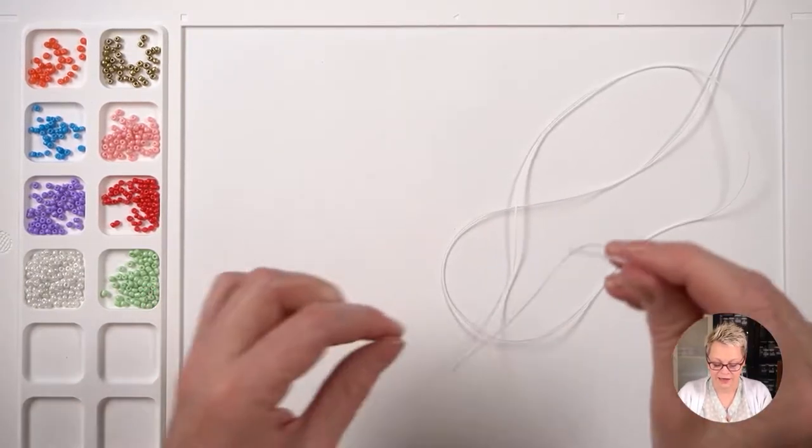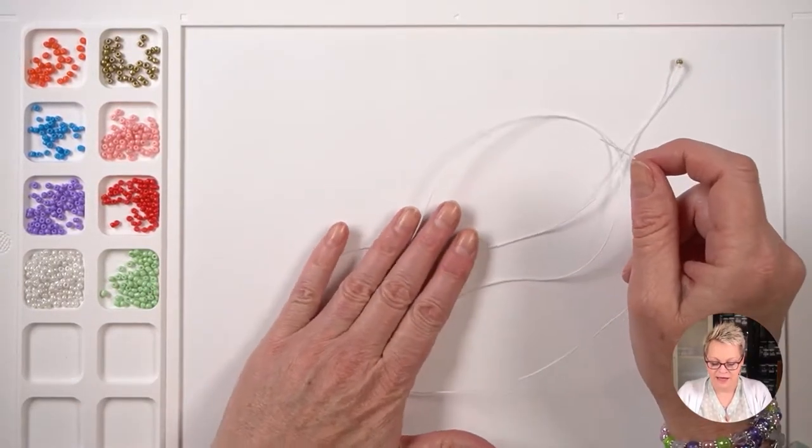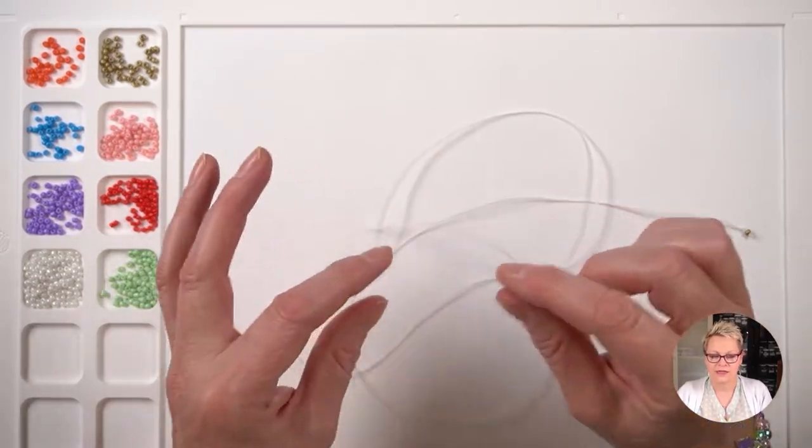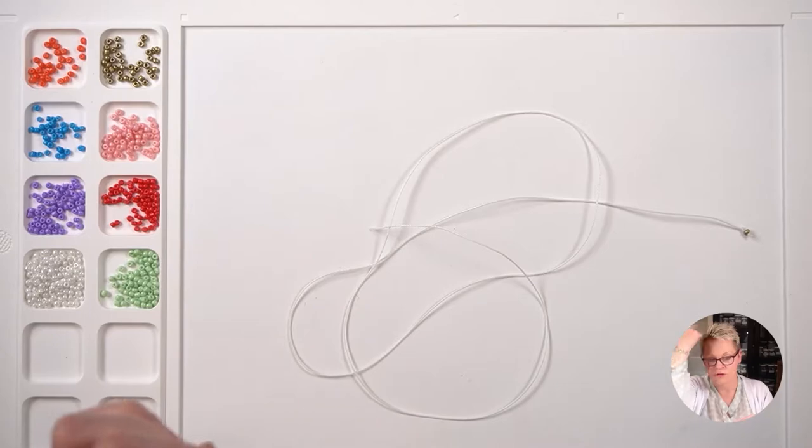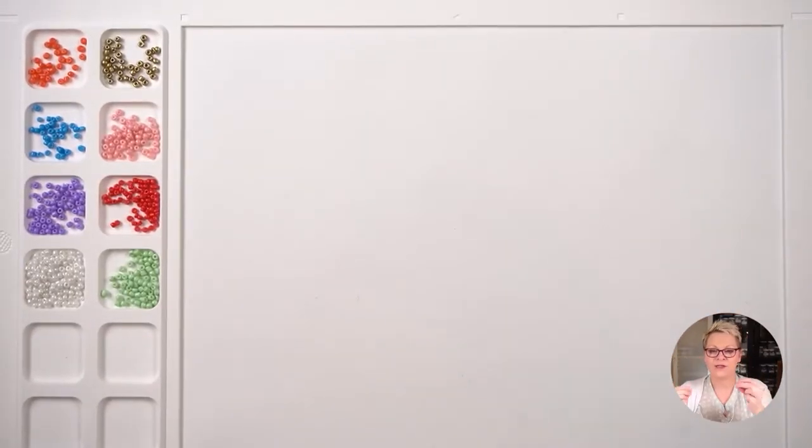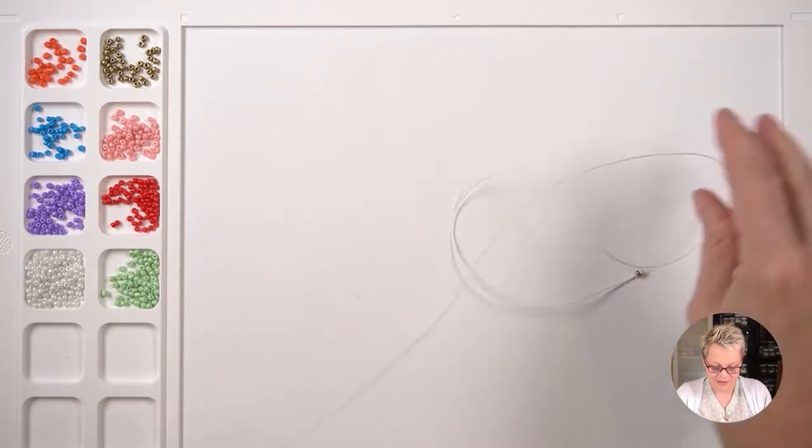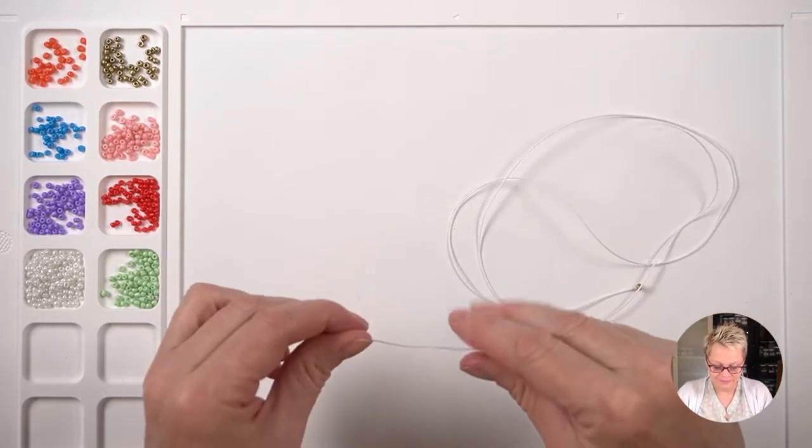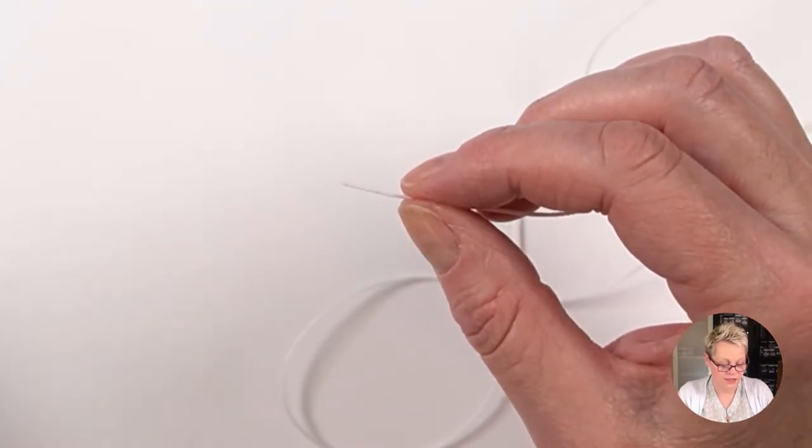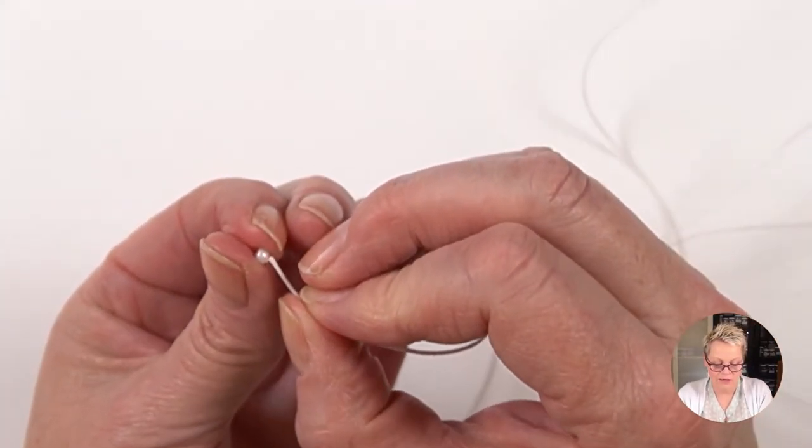I have a meter of thread here and the reason I have a meter of thread is because you need to make sure that you can stretch it out to go around your head. Because it's all well and good to have a choker but there's no point if you can't get it over your head. So you do need extra. I've zoomed in so that you can see closely. Now what I'm going to do first is thread on six of my white beads.